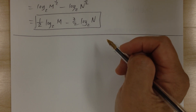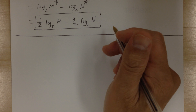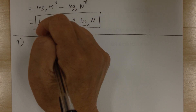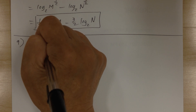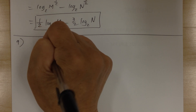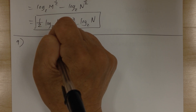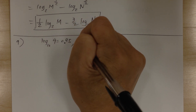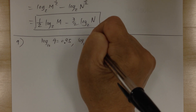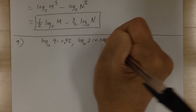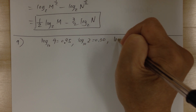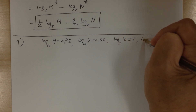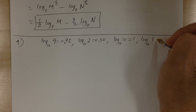This one you need to evaluate without using the calculator. So number 9. First you have to write down all the given values: log base 10 of 9 equals 0.95, log base 10 of 2 equals 0.30. Remember you also have to know that log base 10 of 10 equals 1, and log base 10 of 1 equals 0.